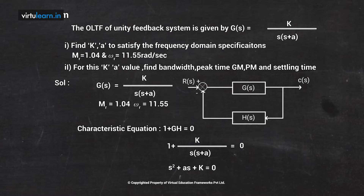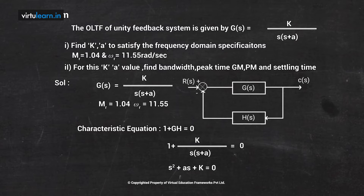This is the characteristic equation of the given second order system. Comparing it with the standard form s² + 2ζωn·s + ωn² = 0, we get k = ωn² and 2ζωn = a, so ζ = a / (2√k), or equivalently a = 2ζ√k.